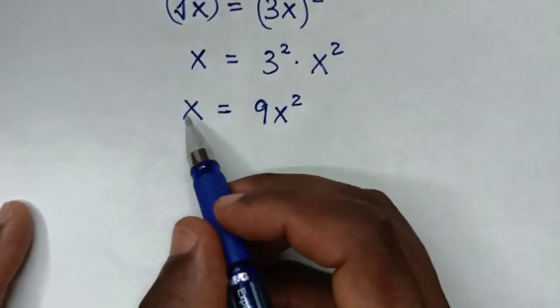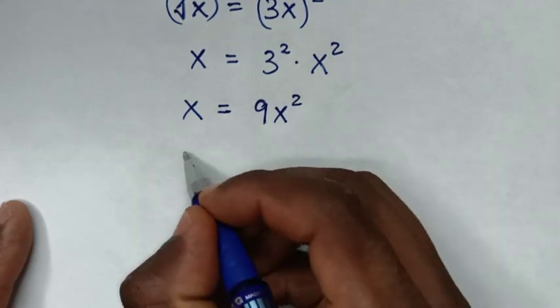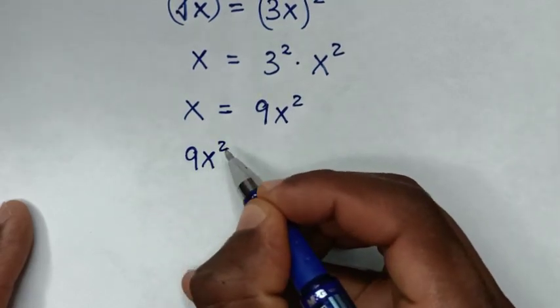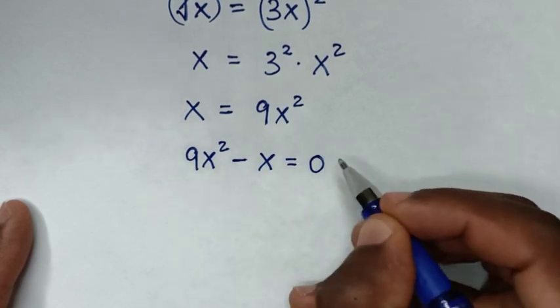Then in the next step, we will take this x into the right side. So it will be 9 x square, this x will take to this side to be minus x is equal to 0.